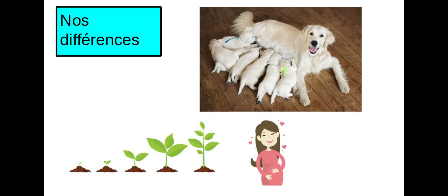Something else that is special about living things is that living things are able to reproduce. Comme la maman chien et la maman en bas qui est enceinte. Just like a mother dog that gives birth to puppies, or a human mother that carries a baby. We are able to reproduce.